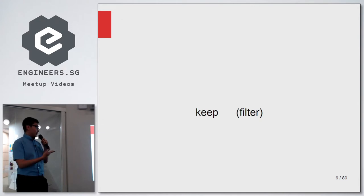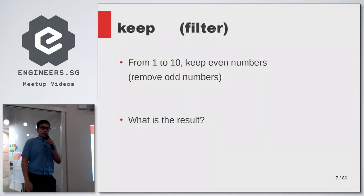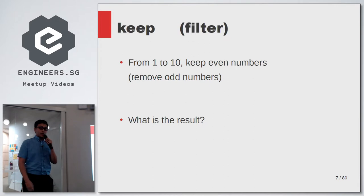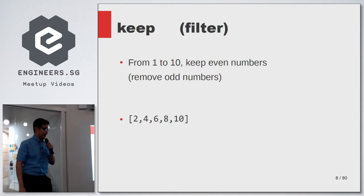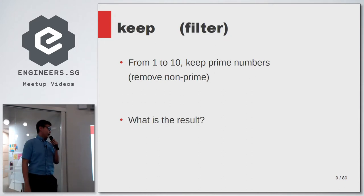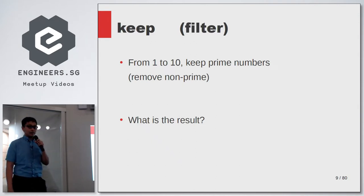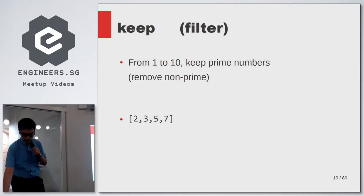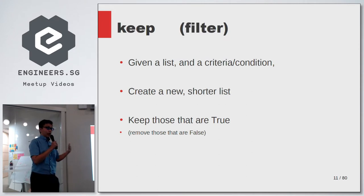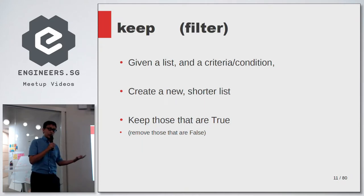Let's start with the keep function. Say you have a list of 1 to 10 and you want to keep the even numbers and remove the odd numbers — your result will be 2, 4, 6, 8, 10. If you have 1 to 10 and want to keep the prime numbers, the result will be 2, 3, 5, 7.